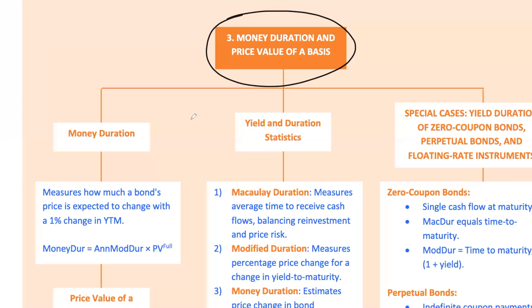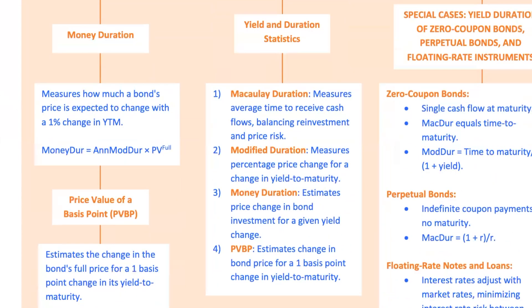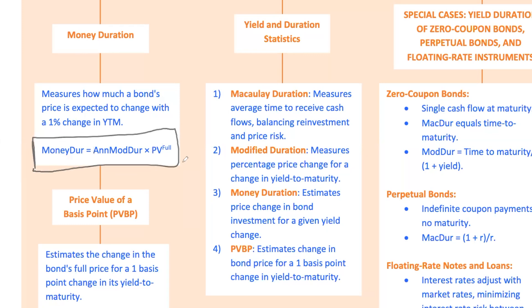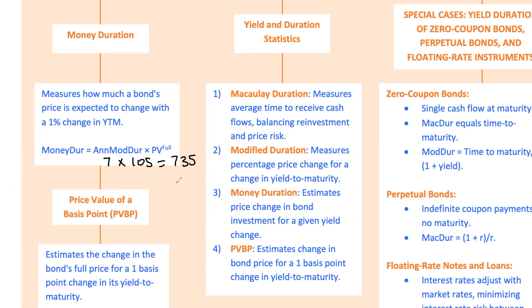Next, let's talk about money duration, also known as dollar duration. If modified duration tells you the percentage change in a bond's price for a 1% change in interest rates, money duration translates that into actual currency terms. Multiply the annualized modified duration by the bond's full price. If a bond has an annualized modified duration of 7 and a full price of $105, the money duration would be $735. This means that for every 1% change in yield, the bond's price would change by about $7.35, giving you a clear picture of the monetary impact of yield changes on your bond investment.